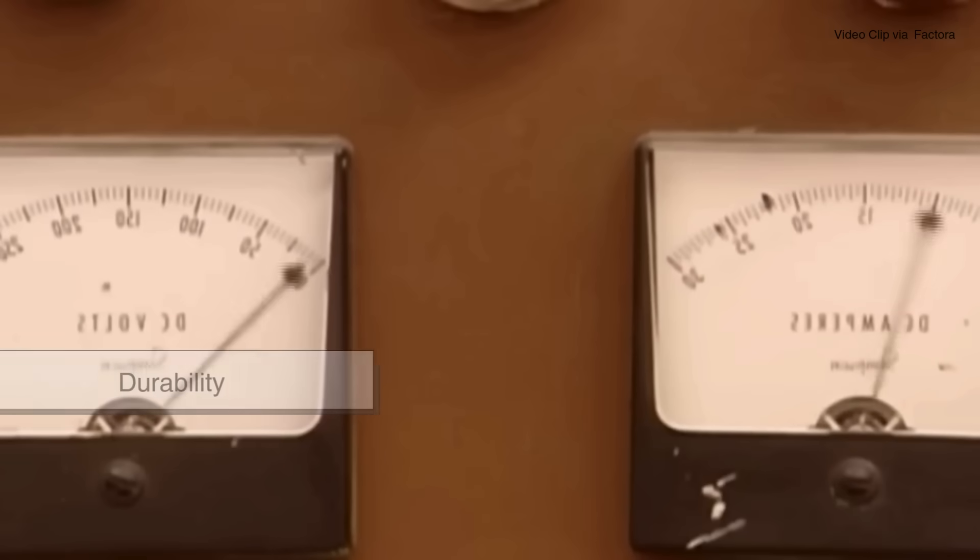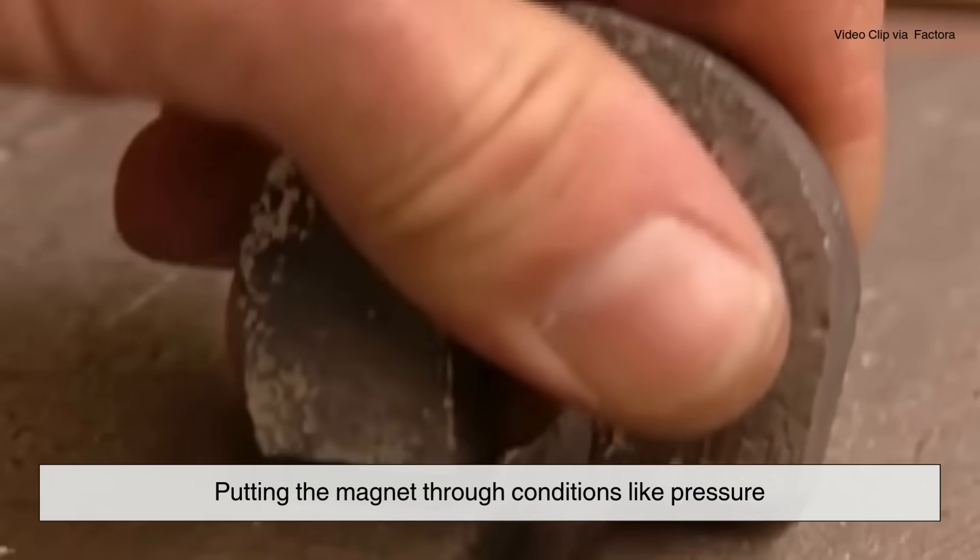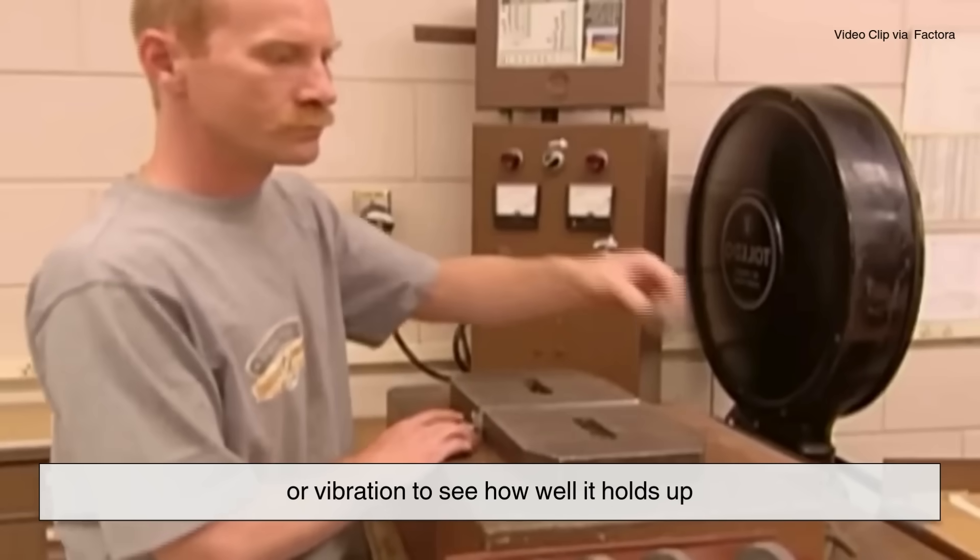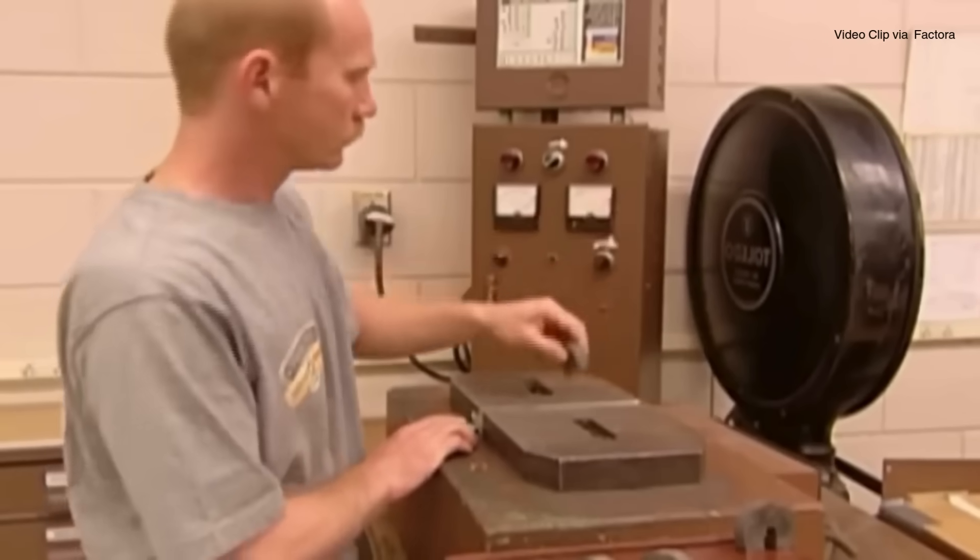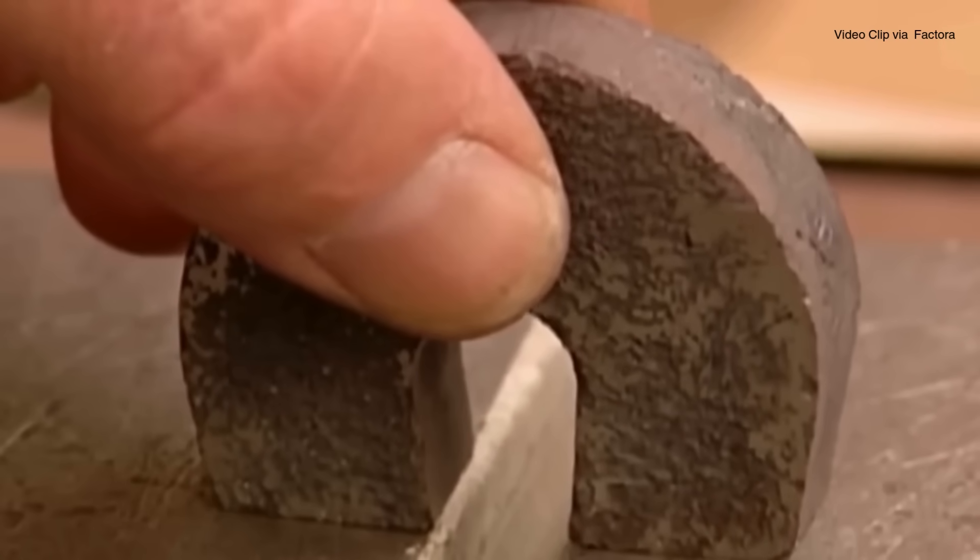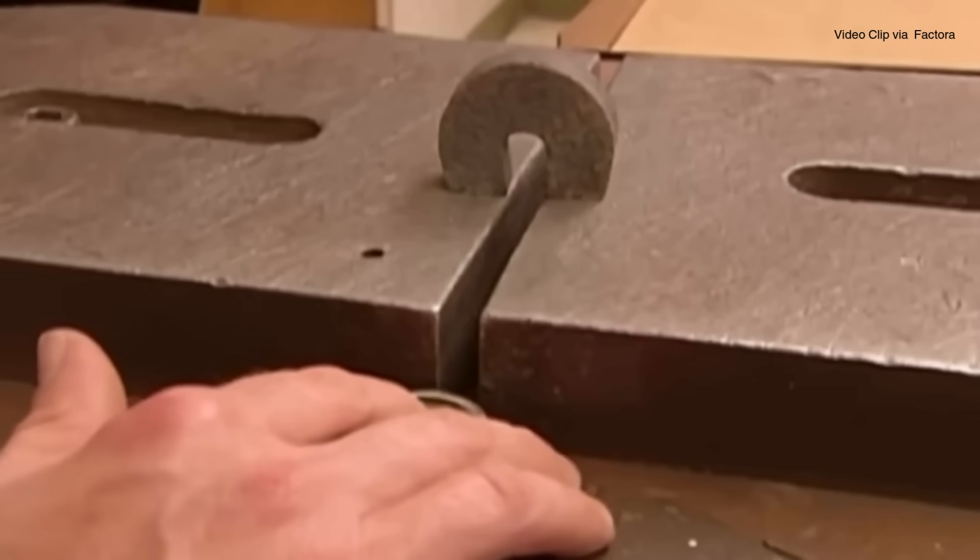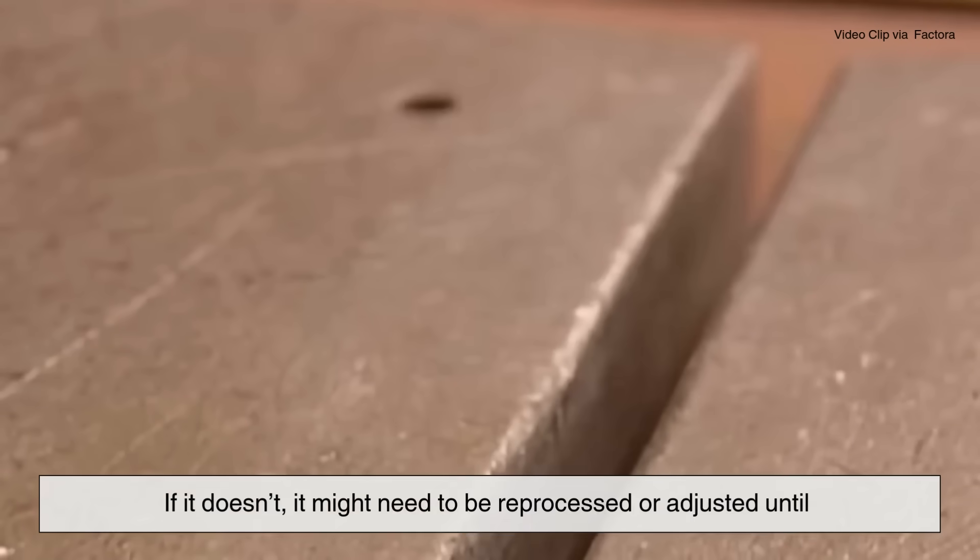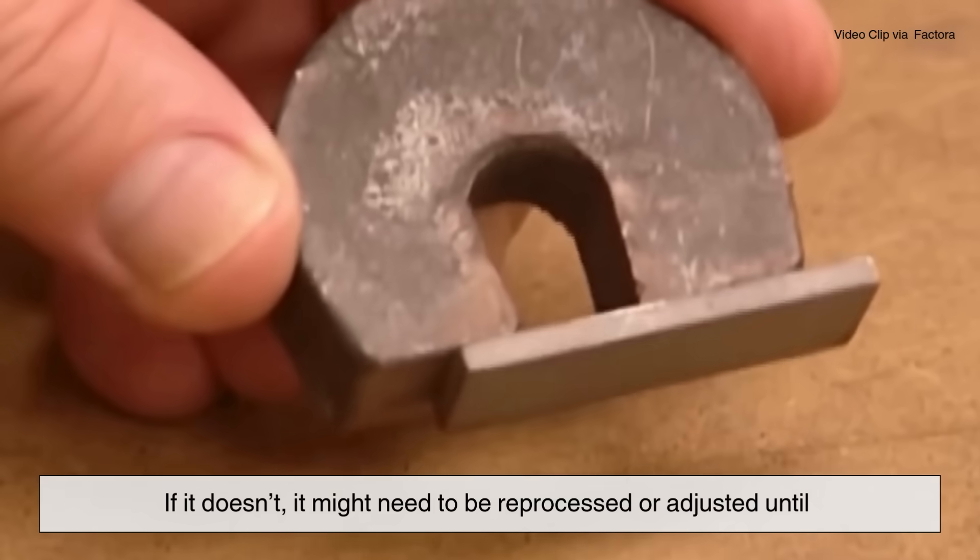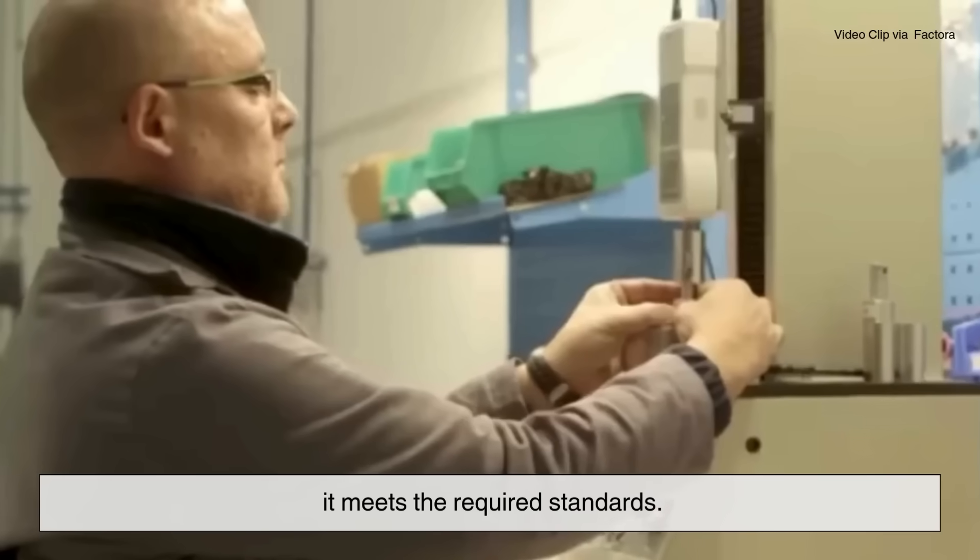Finally, the durability of the magnet is tested. This involves putting the magnet through conditions like pressure or vibration to see how well it holds up. The goal is to make sure the magnet doesn't lose its strength or break easily when used in devices like motors or medical equipment. If the Alnico magnet passes these tests, it's ready to be used. If it doesn't, it might need to be reprocessed or adjusted until it meets the required standards.